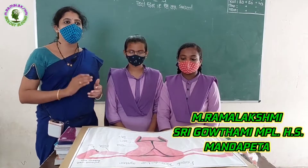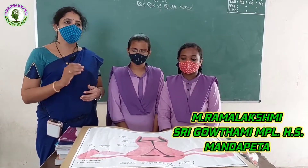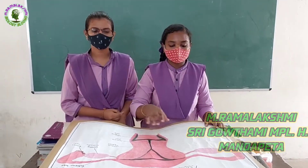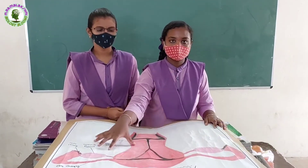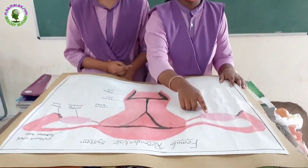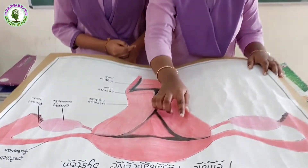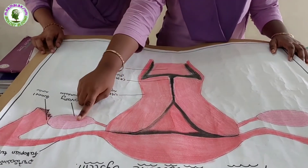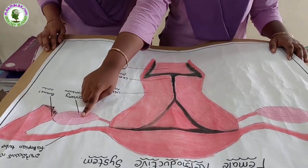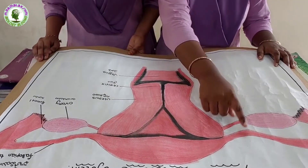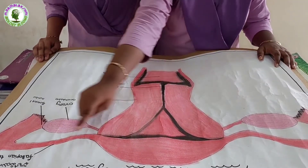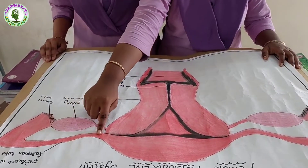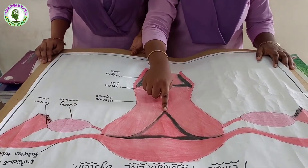The important parts of the female reproductive system are a pair of ovaries, which are located in the abdominal cavity, a pair of fallopian tubes or oviduct, and uterus.